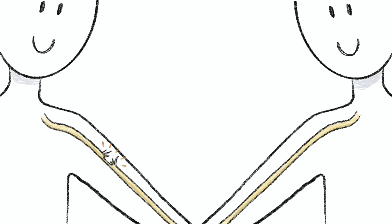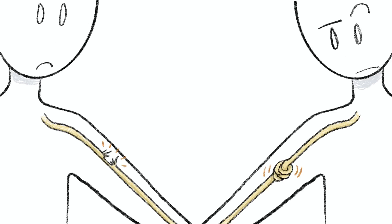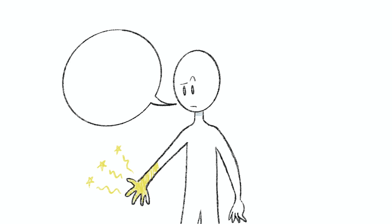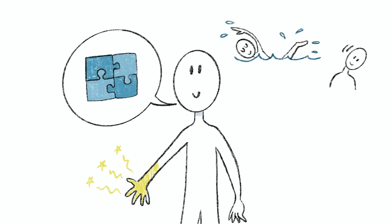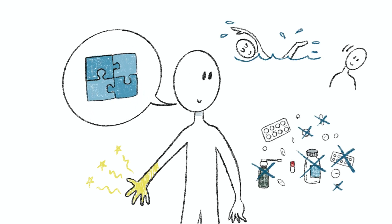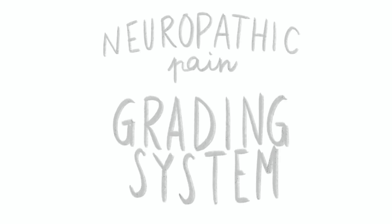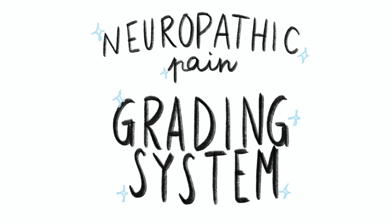Neuropathic pain is caused by a lesion or a disease of the somatosensory nervous system. Knowing whether or not a person has neuropathic pain is crucial to help guide management strategies, like helping the person to make sense of their pain and choosing specific physiotherapeutic or pharmacological interventions. Let us show you how you can use the neuropathic pain grading system in your clinical practice.